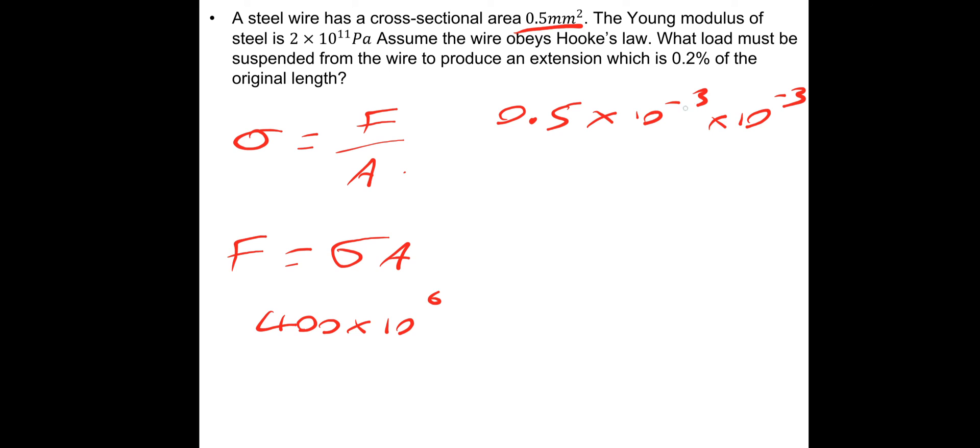That's 0.5, we need to add these indices, so 0.5 times 10 to the minus 6. Multiply 0.5 times 10 to the minus 6, and that gives us a force which is equal to 200 newtons.